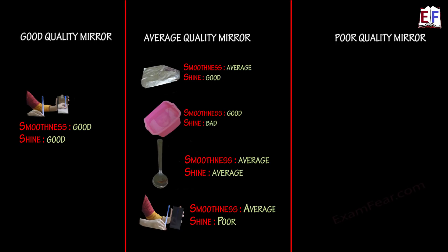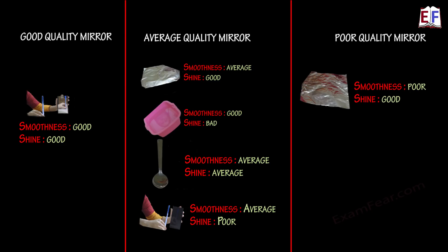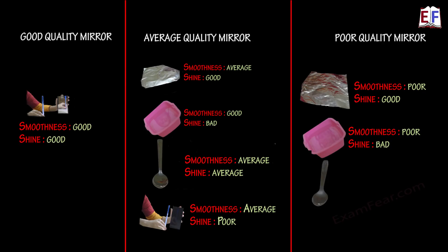The third category is poor mirror. The crushed aluminium foil has a completely rough surface, so it behaves like a poor mirror. Water with ripples also has a rough, uneven surface and is therefore a poor mirror. Finally, the old spoon, due to repeated usage, has a surface that is neither smooth nor shiny, so it also behaves like a poor mirror.